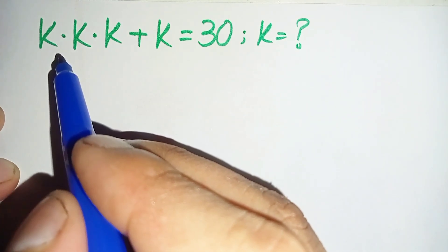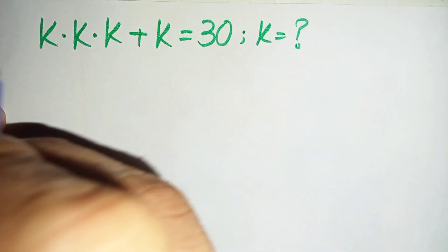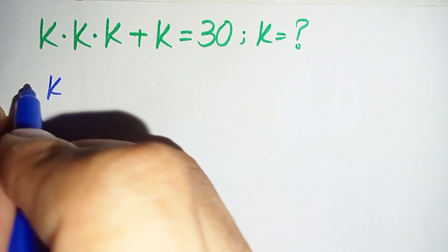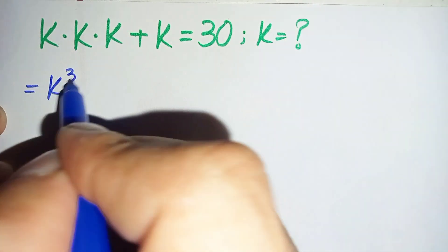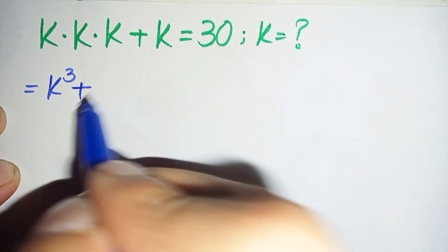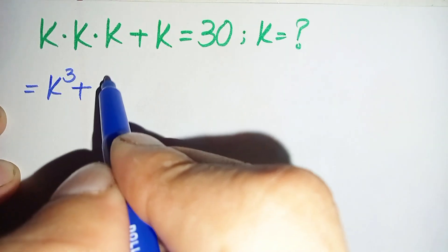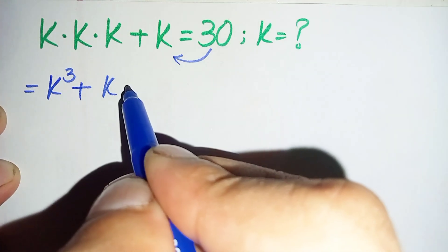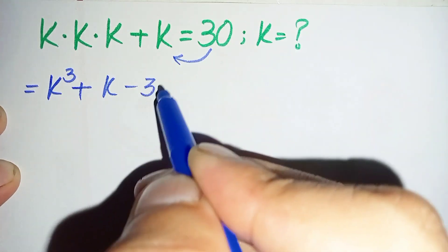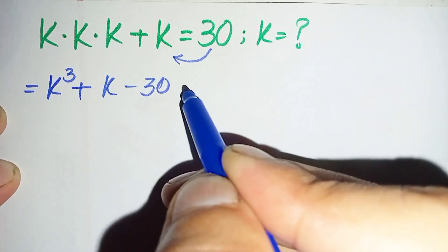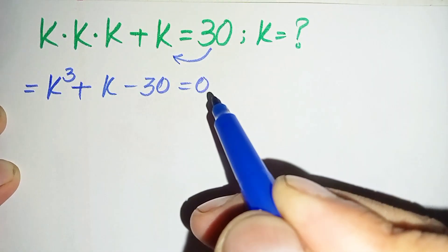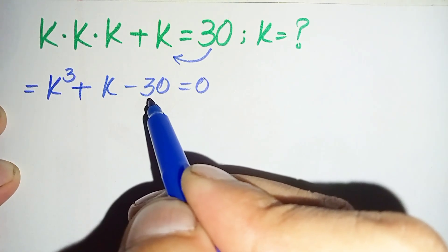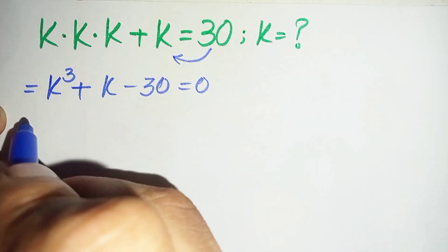We will start our solution. Here k is multiplied three times, so we can write this as k cube plus k. We will move 30 to the left hand side, so it will become k cube plus k minus 30 is equal to zero.